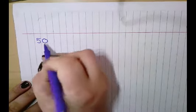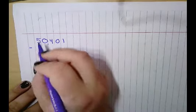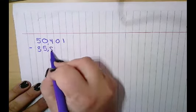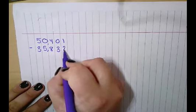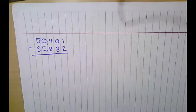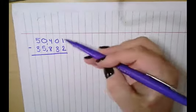I'm also going to show you how to check your work to make sure that you are correct. Our last problem was subtracting 50,401 take away 35,832. Remember, we were learning how to subtract across zeros. What do we do when we can't borrow from zeros? Let's go ahead and start.